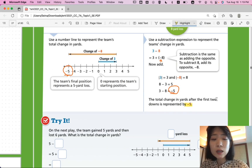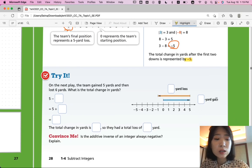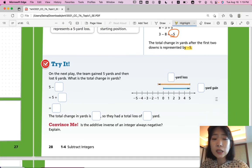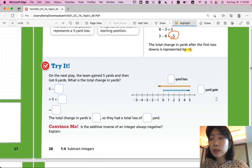The total change in yards after the first two downs is represented by negative 5. Alright, now it's your turn. Try it. On the next play, the team gained 5 yards and then lost 6 yards. What is the total change in yards? See if you can fill in the blanks by yourself. Come back when you're ready for answers.